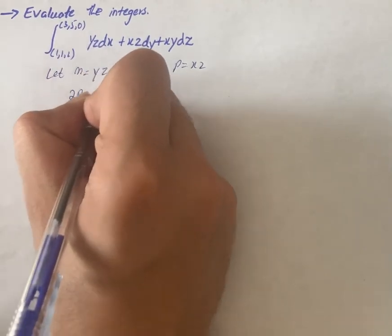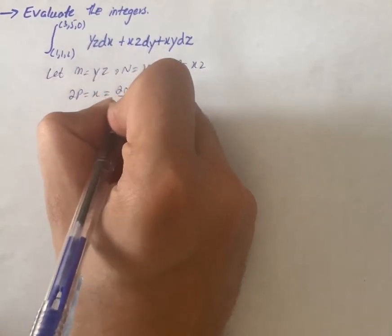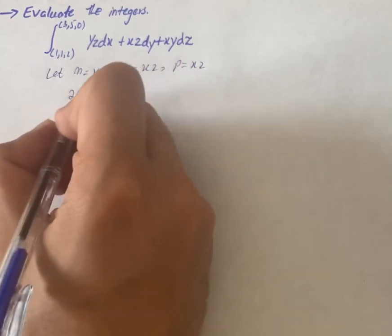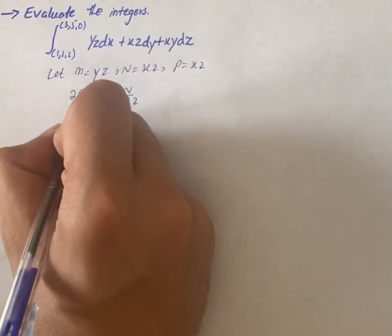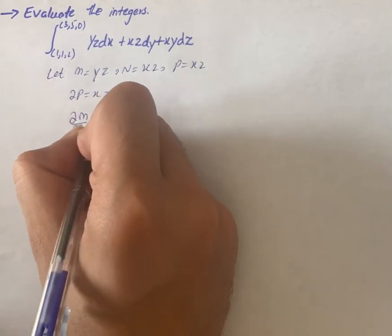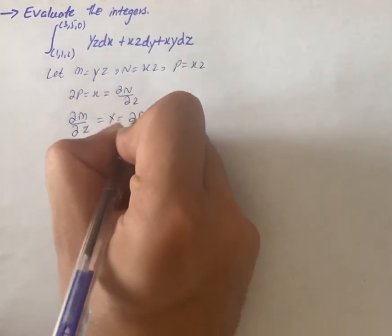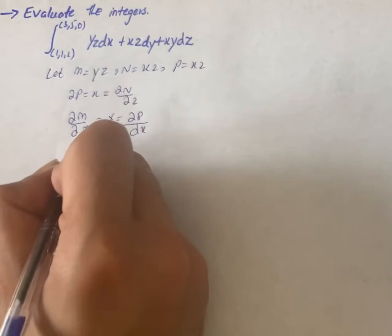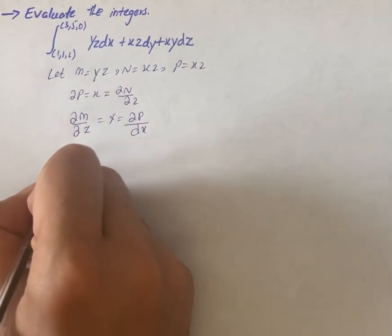xy. That is equal to n by z. The same way we have ∂m/∂z is equal to y is equal to ∂p/∂x. So we have after